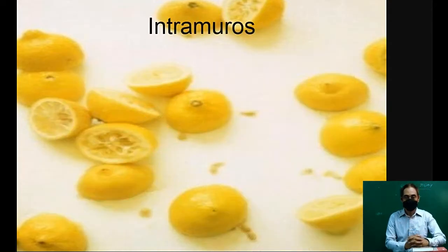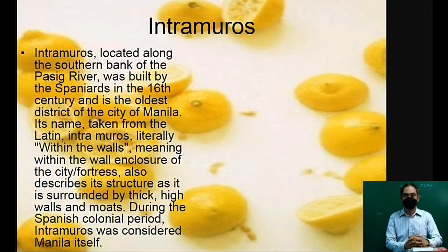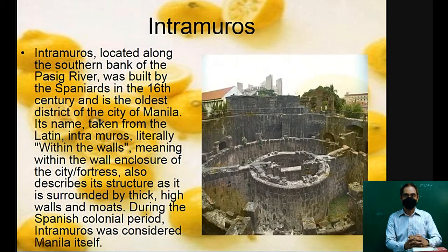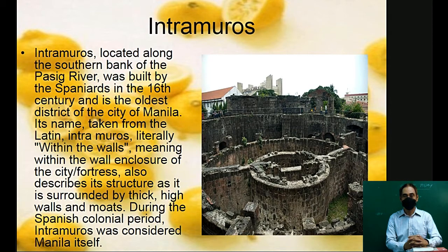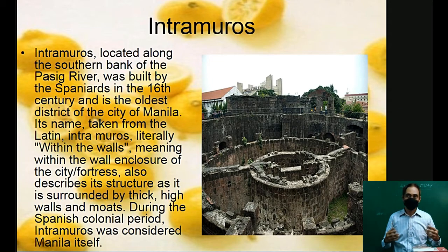Intramuros, located along the southern bank of the Pasig River, was built by the Spaniards in the 16th century. 'Within the walls' is the literal meaning of Intramuros. Here is the design of the Intramuros — another fortress in Manila.